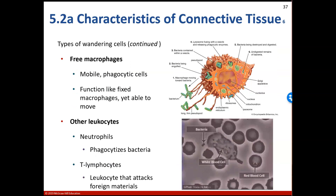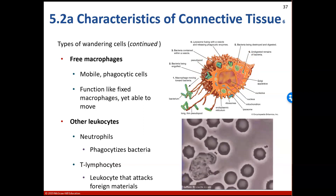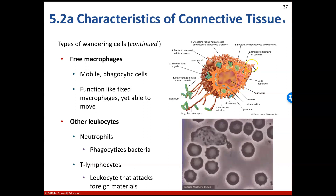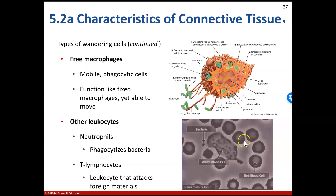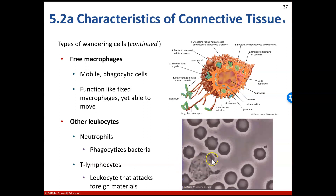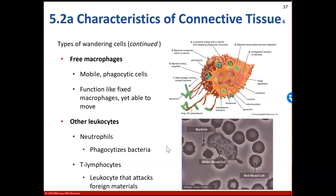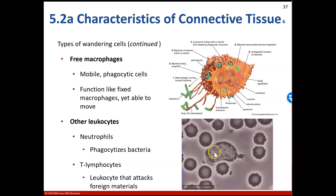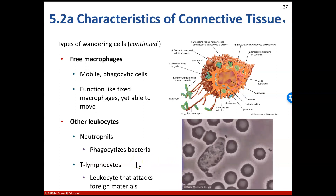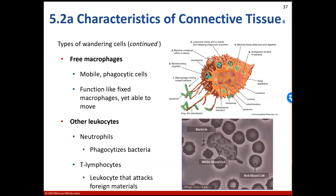Free macrophages are mobile, phagocytic cells, just like fixed macrophages, but they can move between different tissues. There's a video here depicting a white blood cell chasing and engulfing a bacteria cell, which is what phagocytosis looks like. An example of a white blood cell that does this is our neutrophil. Another wandering cell type is our T lymphocytes or T cells, and they attack foreign materials such as abnormal cells, cancer cells, or virus-infected cells.